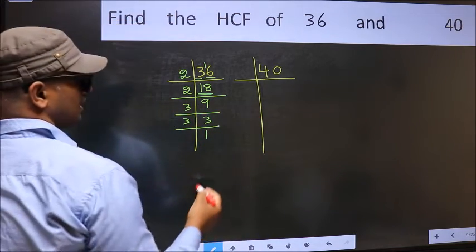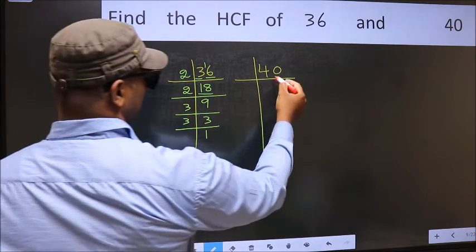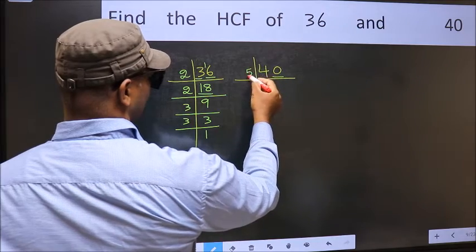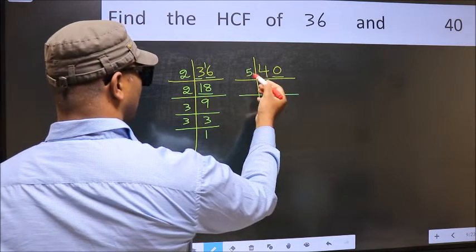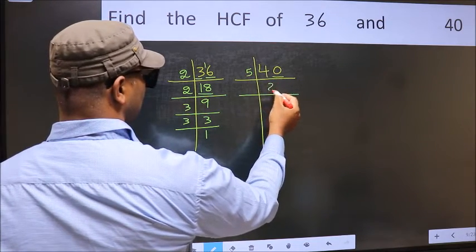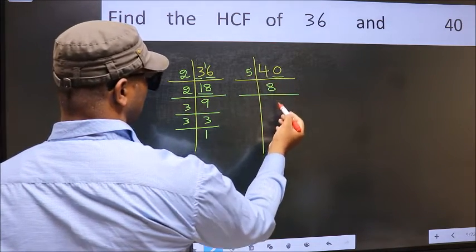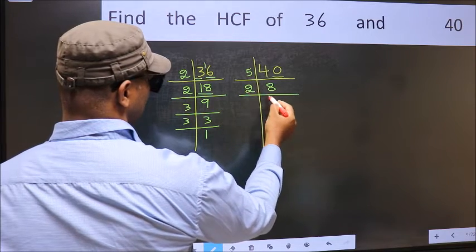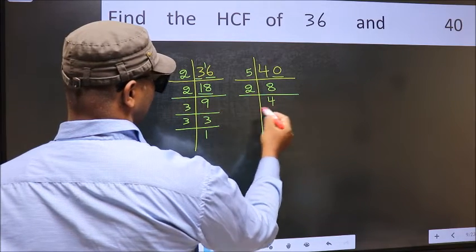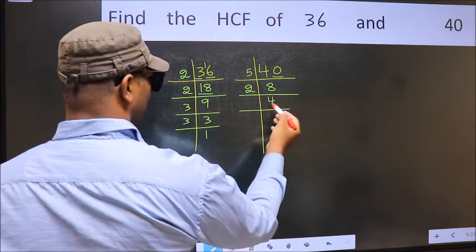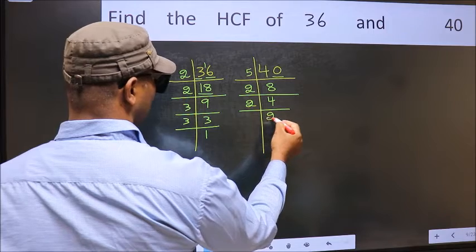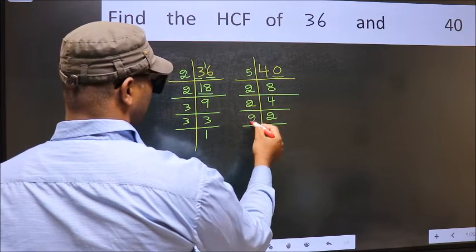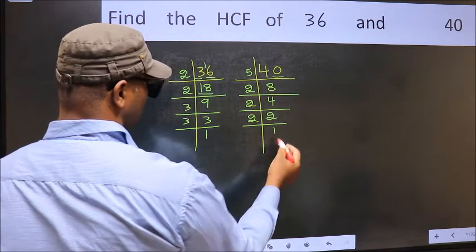Now for the other number, 40. Last digit is 0, so take 5. 5 times 8 is 40. Now 8 is 2 times 4. And 4 is 2 times 2. Now 2 is a prime number, so 2 times 1 is 2.